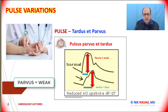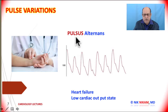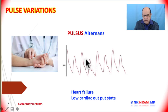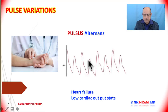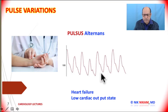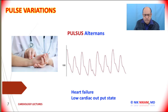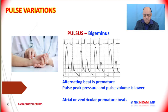Pulsus alternans is a normal pulse followed by a pulse with a lower systolic pressure and reduced pulse pressure. This is commonly seen in patients with heart failure and low cardiac output states. When patients display this type of pulse waveform with a history of congestive heart failure, it indicates significant left ventricular dysfunction with a poor prognosis.